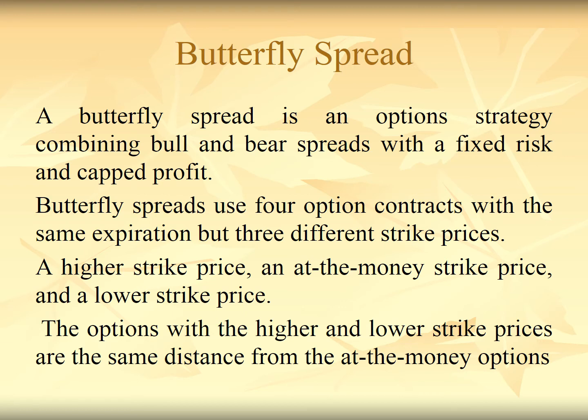In butterfly spreads we use four options with the same expiration but three different strike prices. The expiration date can be the same but the strike prices would be different: a higher strike price, an at-the-money strike price, and a lower strike price. The options with the higher and lower strike prices would be at the same distance from the at-the-money option.